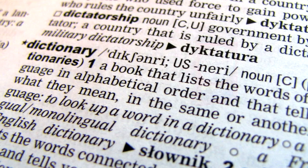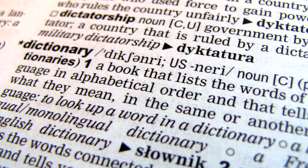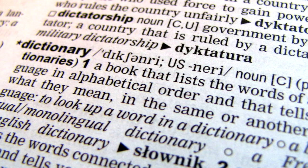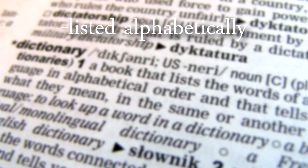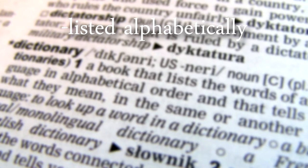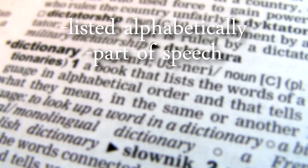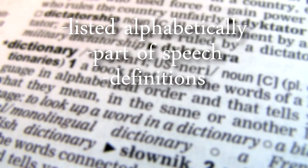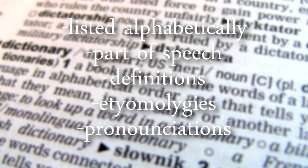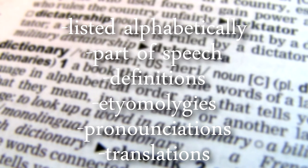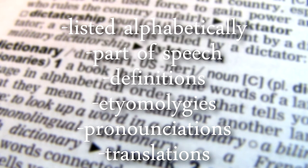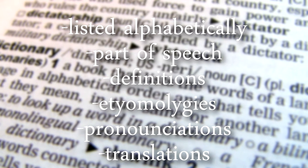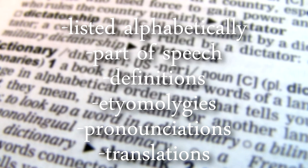For example, a dictionary. A dictionary has a collection of words in one or more specific languages, often listed alphabetically, with lists of the part of speech, definitions, etymologies, pronunciations, translations, and other information. So it's safe to say that a dictionary is comprehensive.